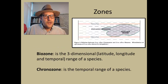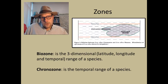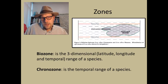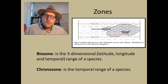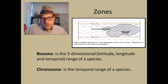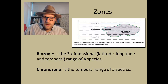The last term we are going to define is zones. Zones define a three-dimensional or two-dimensional zone in the rocks where you find characteristic fossils or particular fossil species. There are two types of zones: biozones and chronozones, and they are very different. I will explain exactly what each one of these are.